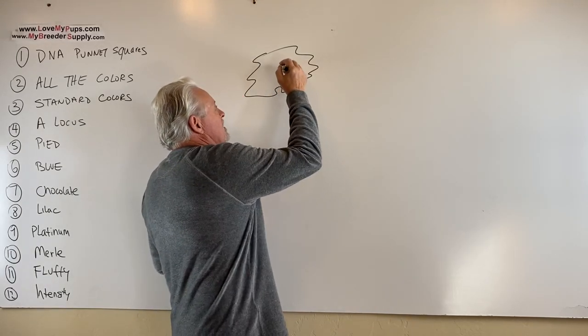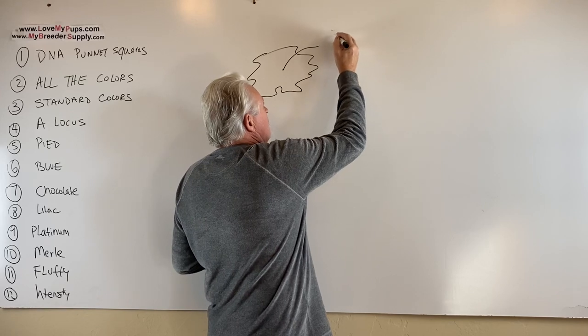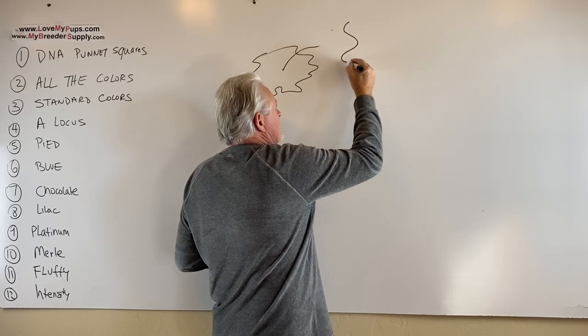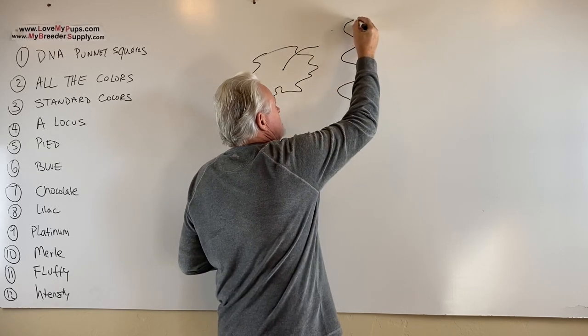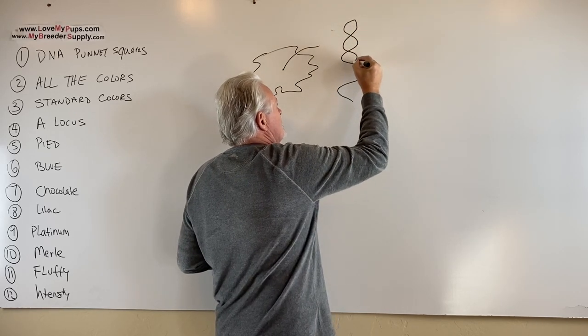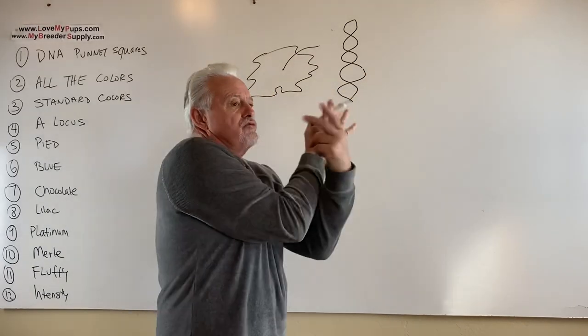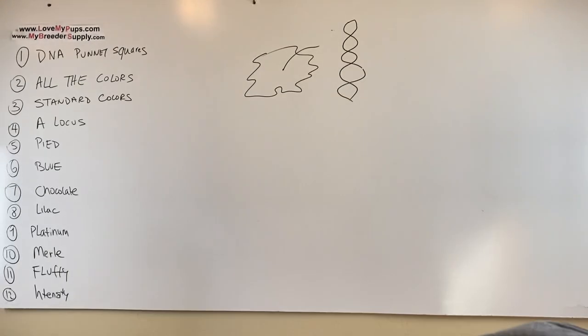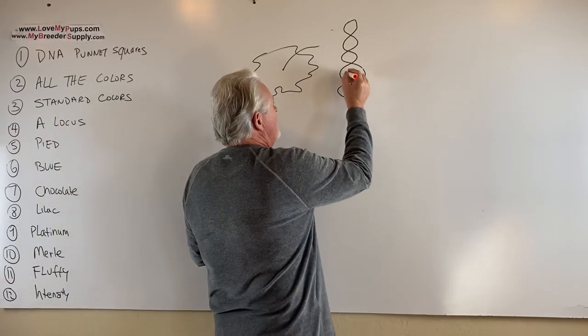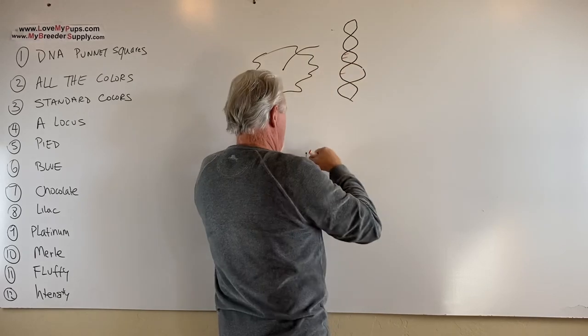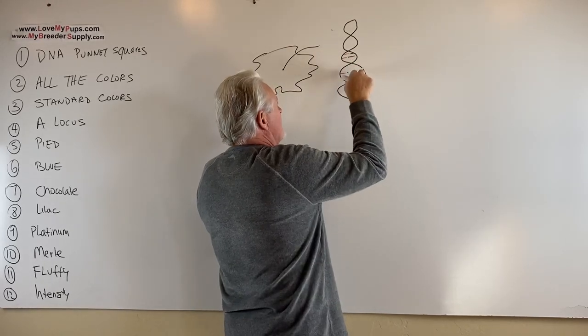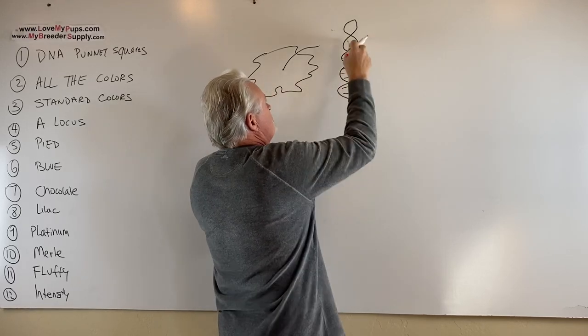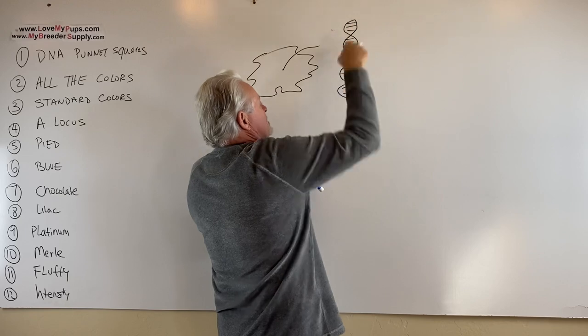And inside these cells are chromosomes and inside those chromosomes is strands of DNA. And we're going to do a representation of a DNA strand. So here's a DNA strand and it's what's called a double helix. It's two strands wound together. And there are proteins that link these together.